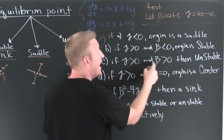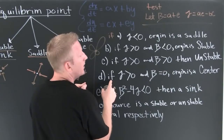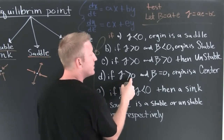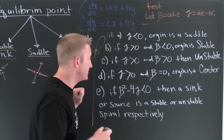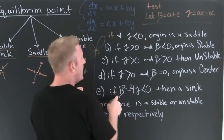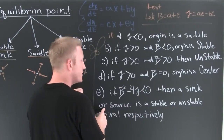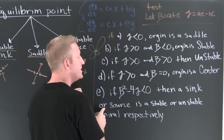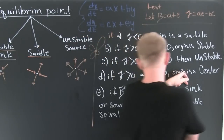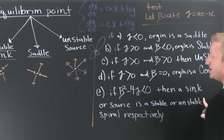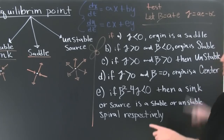If the determinant is bigger than zero and the trace is bigger than zero, then you're unstable. If the determinant is bigger than zero and the trace is zero, then the origin is a center — on your phase portraits you're going to have a circle. And if b squared minus four gamma is smaller than zero, then the sink or source is a stable or unstable spiral, respectively. If it's a sink, then it's going to be a stable spiral spiraling in; if it's a source, then it's going to be an unstable spiral spiraling out.